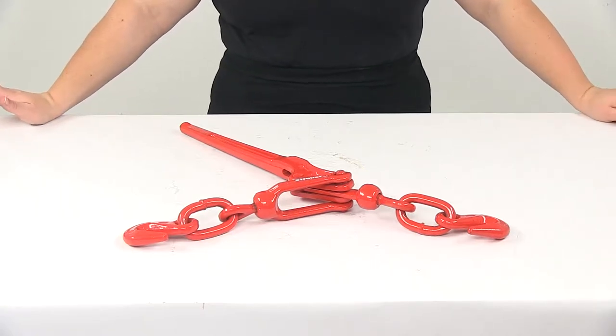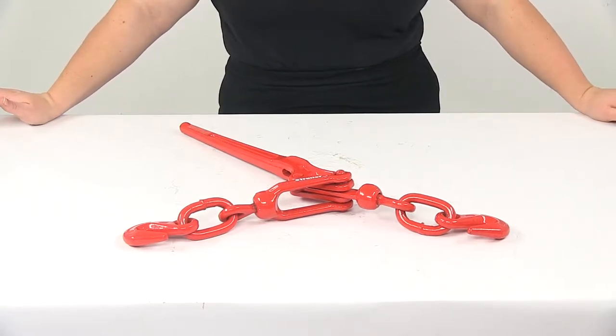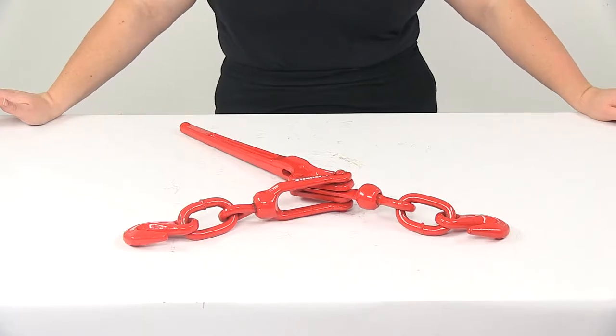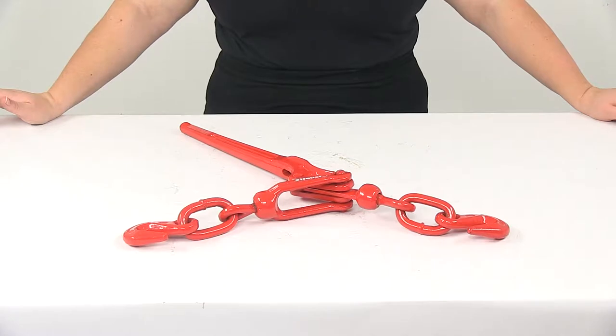Today we're going to take a look at the Titan Chain Lever Type Load Binder for 5/16 inch to 3/8 inch thick chain. This has a safe working load limit of 5,400 pounds.